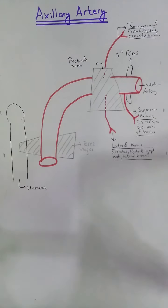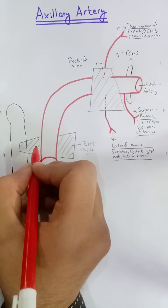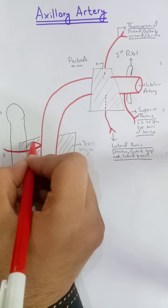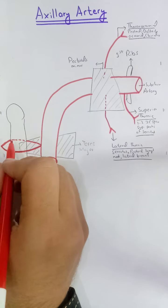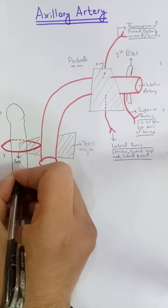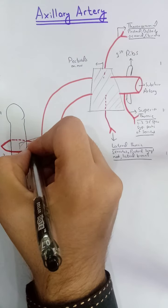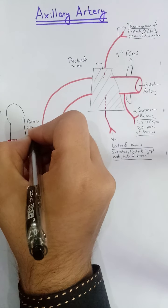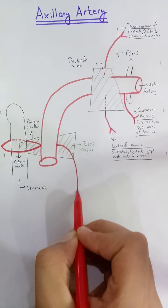Now the third part of the axillary artery has three branches. Two of them are the anterior circumflex and the posterior circumflex humeral arteries. They both anastomose with each other and supply the humeral head region.